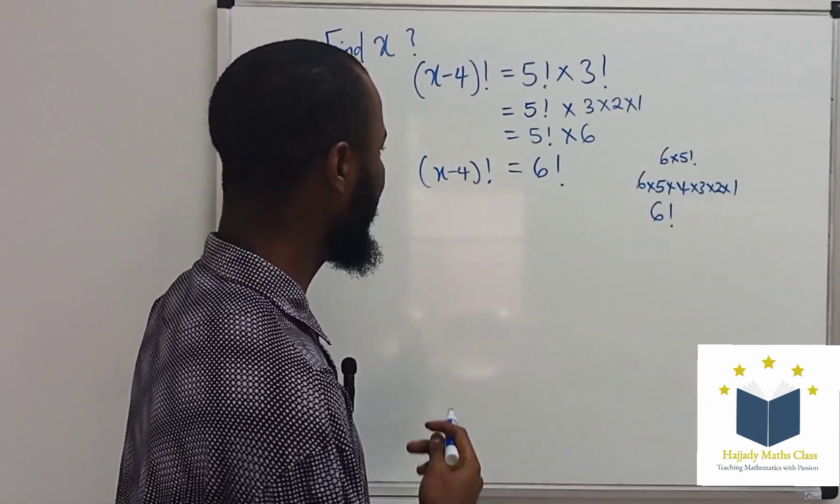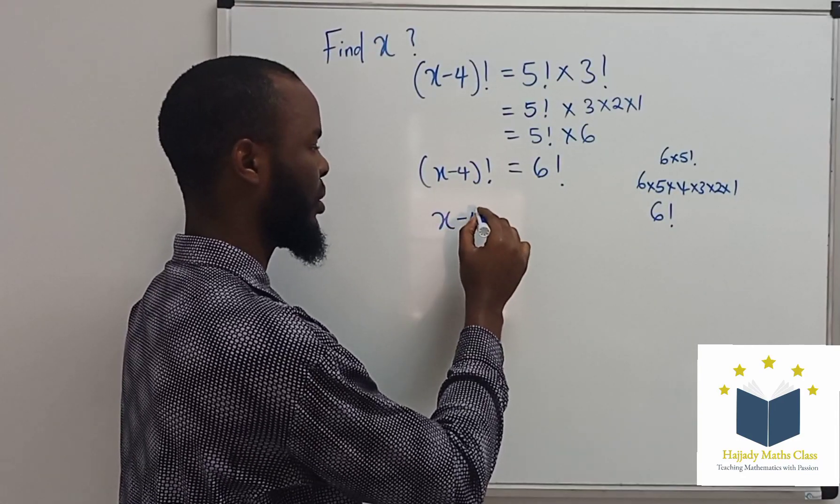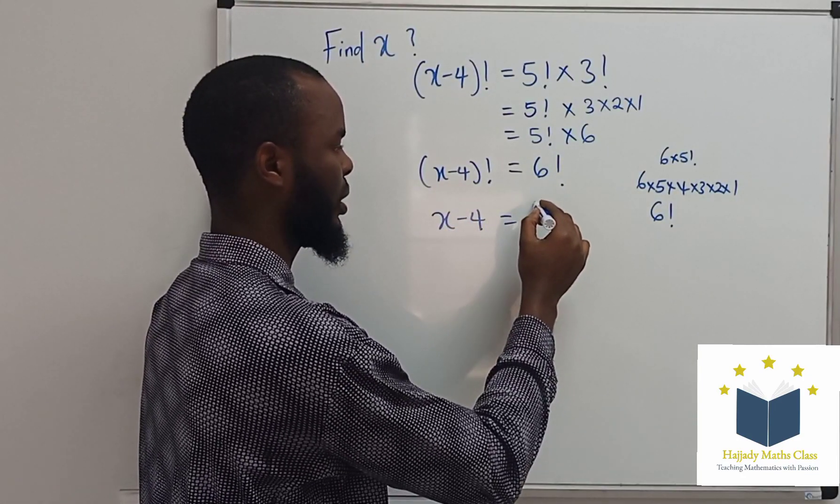So, now, summing further, we're having factorial canceling out here. So, here, I'm going to have x minus 4 equals 6.